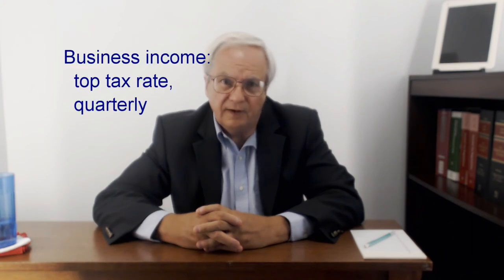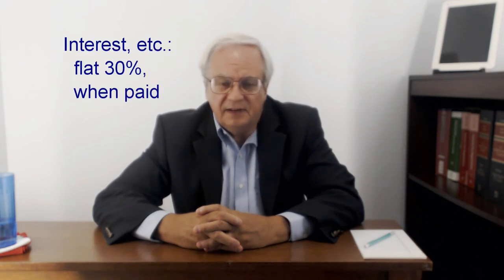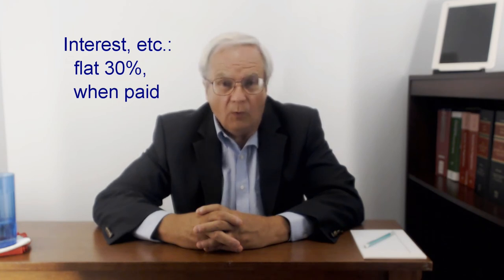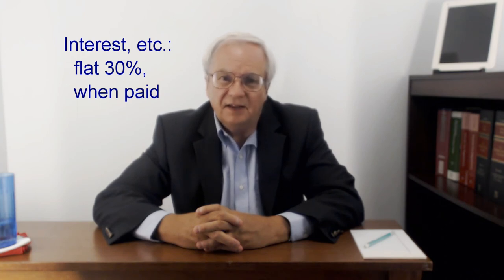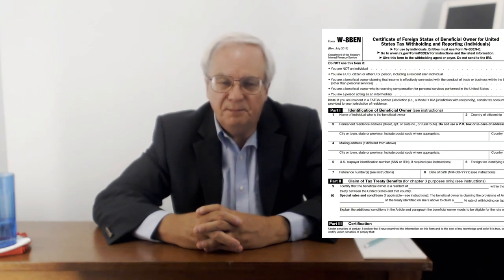For business income, including rental income, payments must be made quarterly, computed at the top tax rate for the type of partner. For interest, dividends, royalties, annuities, etc., payments are made when the income is distributed or after year end. The 30% federal tax rate applies unless the partner has provided the partnership with a Form W-8BEN claiming a lower treaty rate.